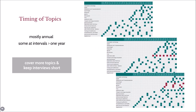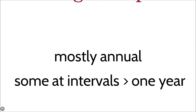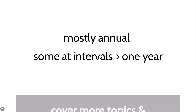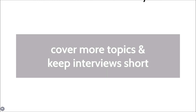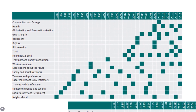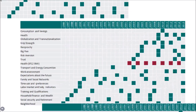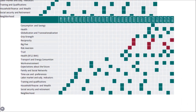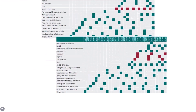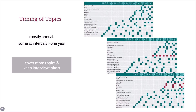While most of the aforementioned content is contained in the questionnaires every year, there are modules on specific topics that are repeated at regular intervals of more than one year. This allows us to cover even more topics without burdening respondents with excessively long questionnaires. Here you can see a selection of topics that follow our multi-annual survey rhythm. While the health module is part of the survey every second year, the personality indicators, for example, are included only every four to five years. A complete list of the modules included at intervals of more than one year is provided in our desktop companion, which can be accessed via this link.